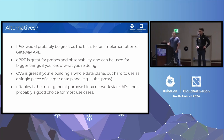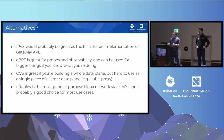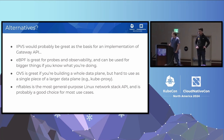None of these are bad APIs. IPVS would probably be great if you're writing gateway API. eBPF is great for probes and observability, and can be used for bigger things if you're ready to deal with it. OVS is great if you're writing a whole data plane, but it's hard to move packets in and out of OVS, so it wouldn't really work for KubeProxy which just wants to be one small piece of the data plane. Nftables is the most general purpose Linux network stack API, and it made sense for us.